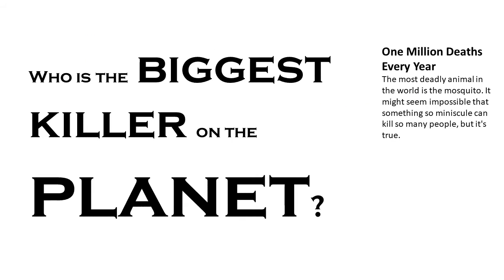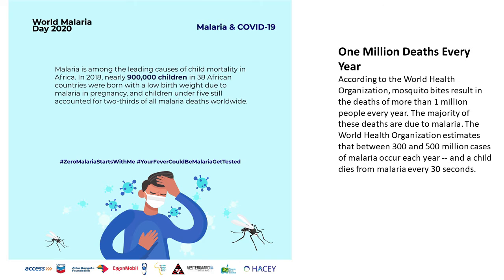Who is the biggest killer on the planet? One million deaths every year. The most deadly animal in the world is the mosquito. It might seem impossible that something so minuscule can kill so many people, but it's true. According to the World Health Organization, mosquito bites result in the deaths of more than one million people every year. The majority of these deaths are due to malaria.